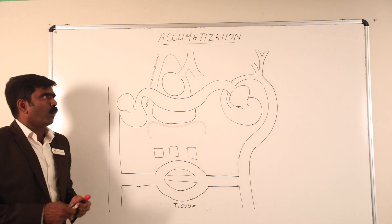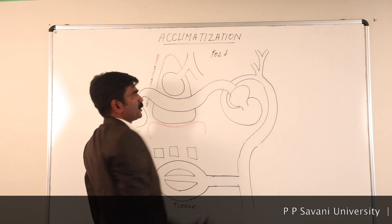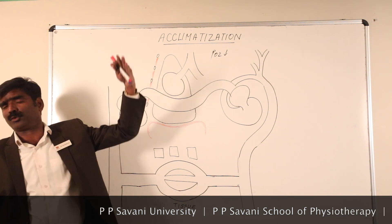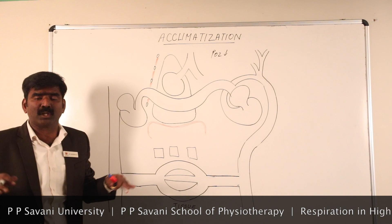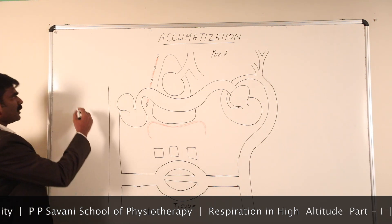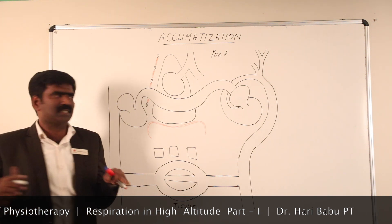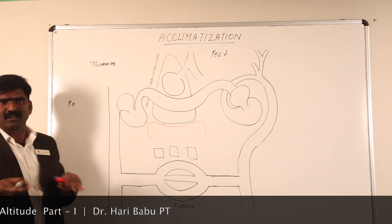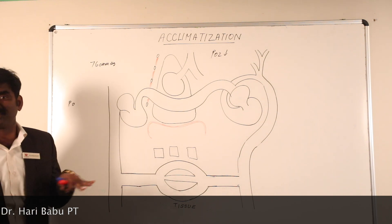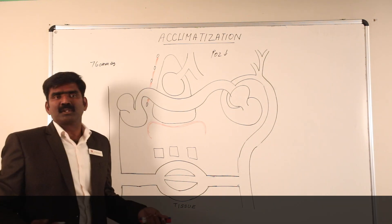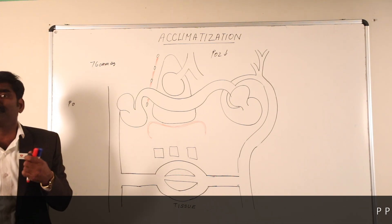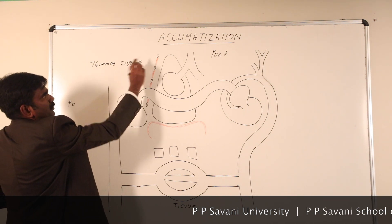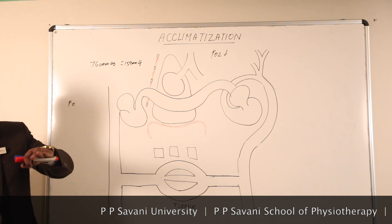When we go to high altitude, the partial pressure of oxygen goes down. Before studying high altitude in detail, let me explain what happens at low altitude, that is at sea level. At sea level, atmospheric pressure is 760 mmHg. Since 21% of this is oxygen, the partial pressure of oxygen at sea level is approximately 159 mmHg.